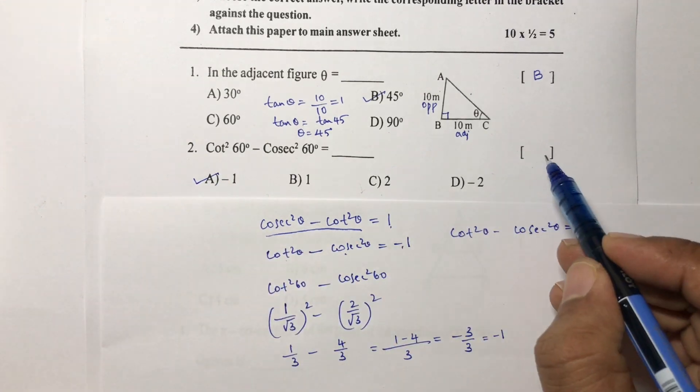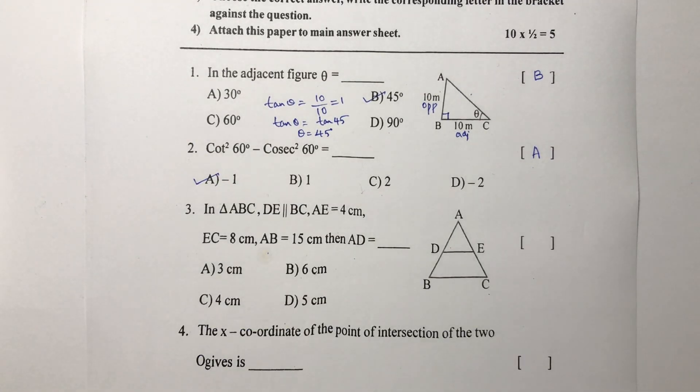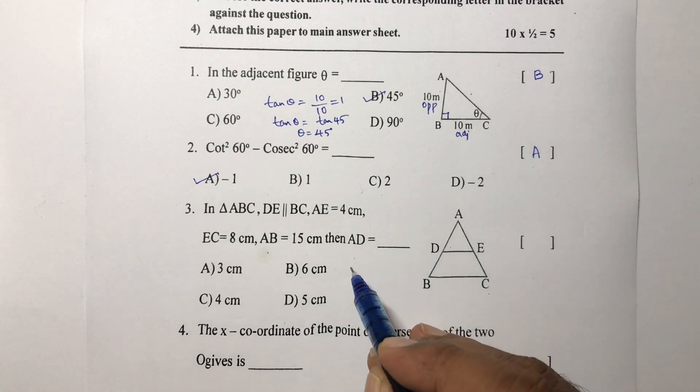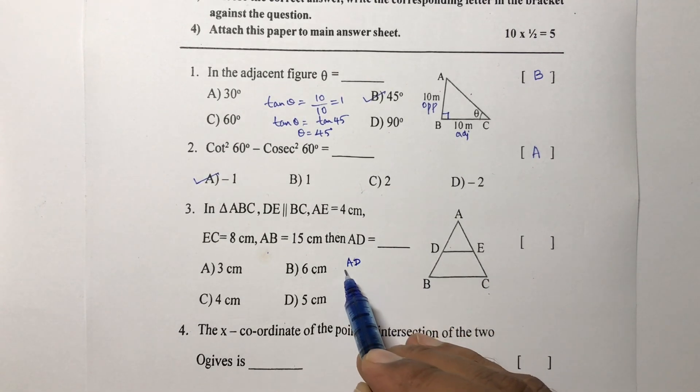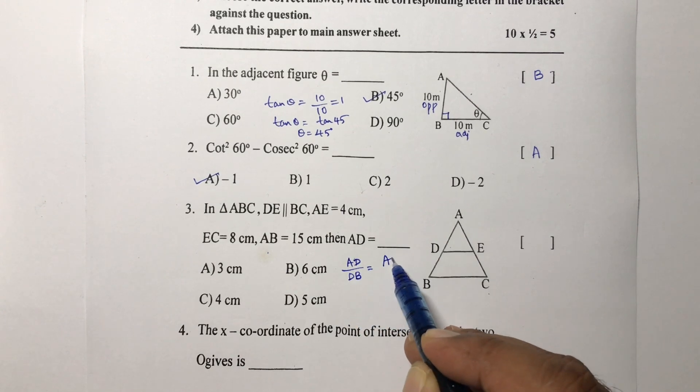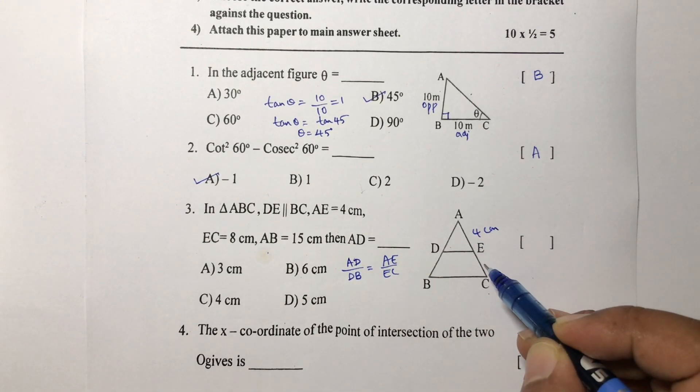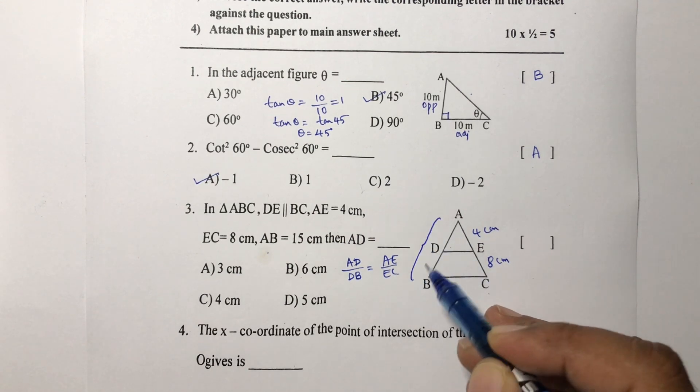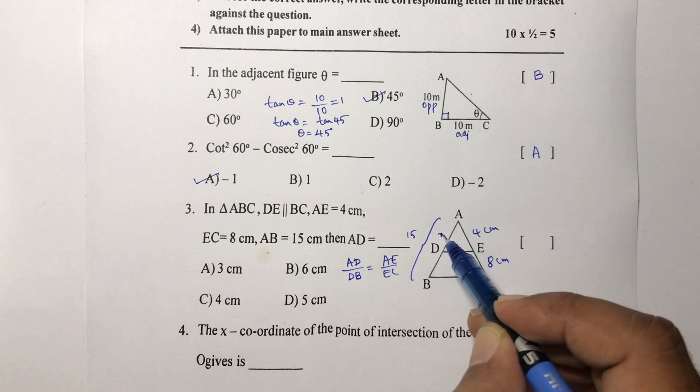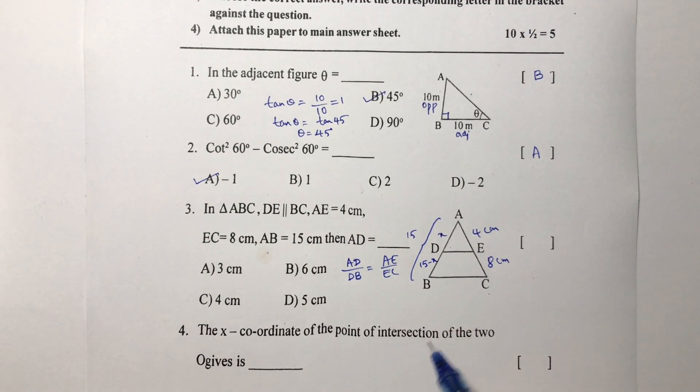Third question: in triangle ABC, DE is parallel to BC. I will apply Thales theorem. AD by DB equals AE by EC. They gave AE value 4 centimeters and EC 8 centimeters, total AB is 15. I need to find AD, I will consider it as x, so DB will become 15 minus x. If we substitute, x by 15 minus x equals 4 by 8.